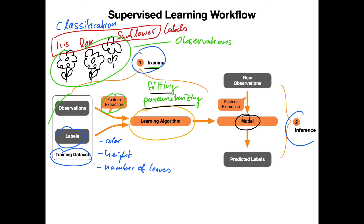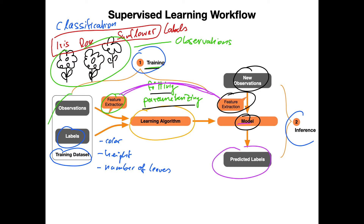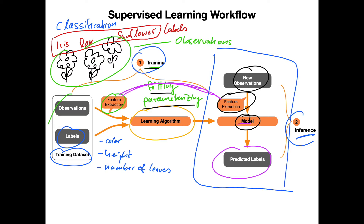The goal is to use the trained model to make predictions on new flowers. For example, if you have a website where people upload pictures of flowers, your pipeline can predict what type of flower it is. New images go through the same feature extraction step as during training, then into the model to predict new labels. This is called inference — it's essentially prediction on new data.